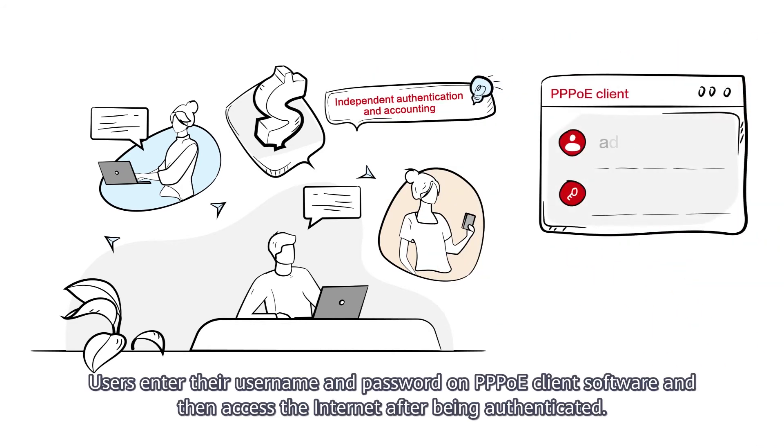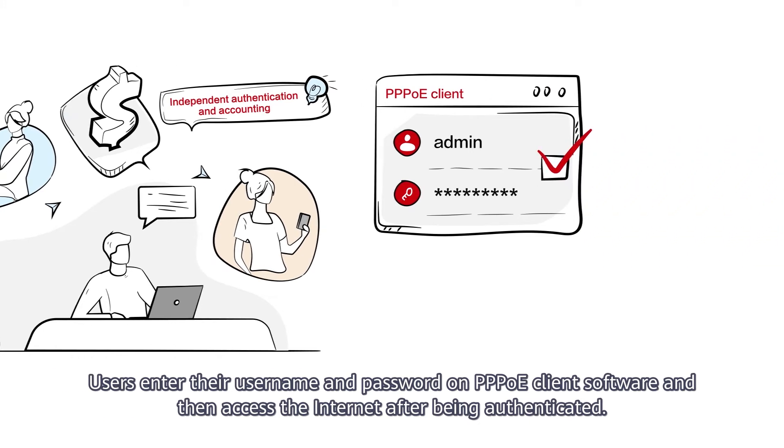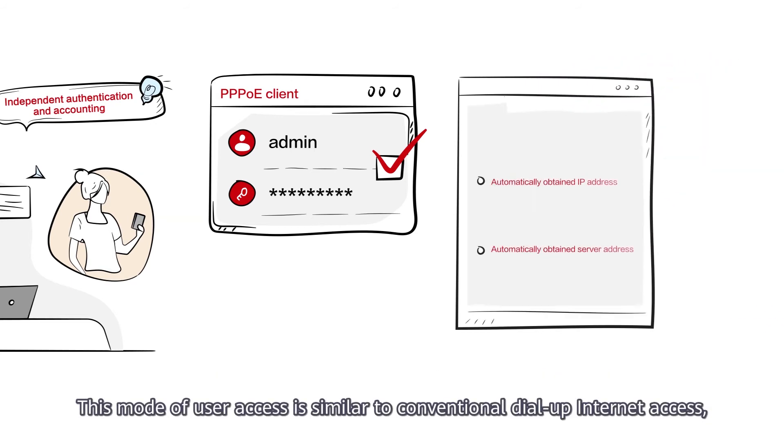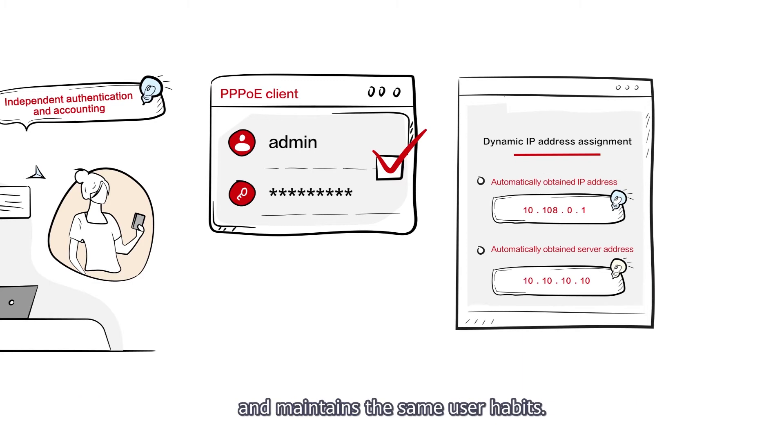Users enter their username and password on PPPoE client software and then access the Internet after being authenticated. This mode of user access is similar to conventional dial-up Internet access and maintains the same user habits.